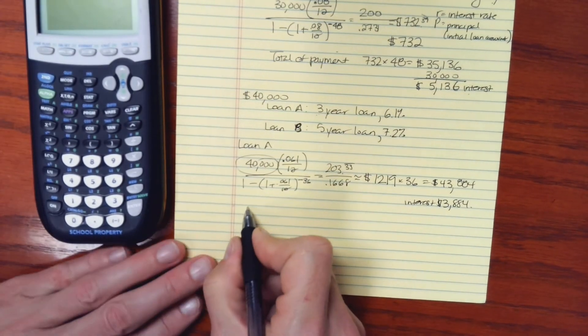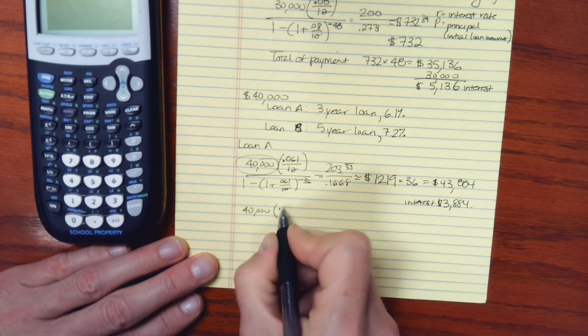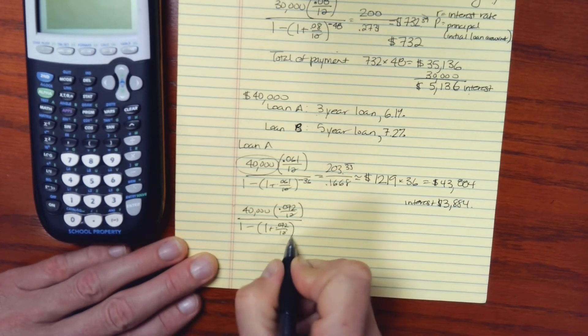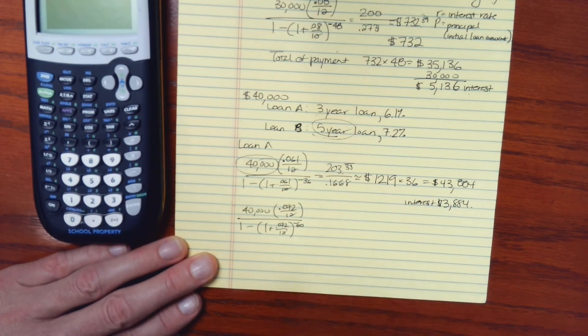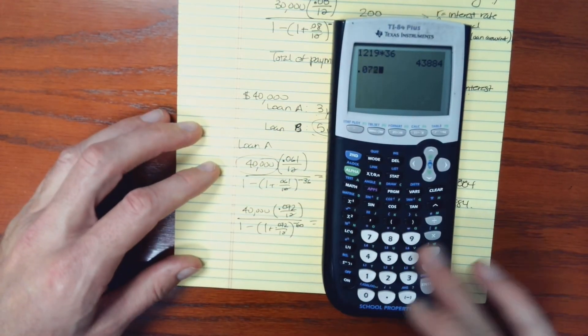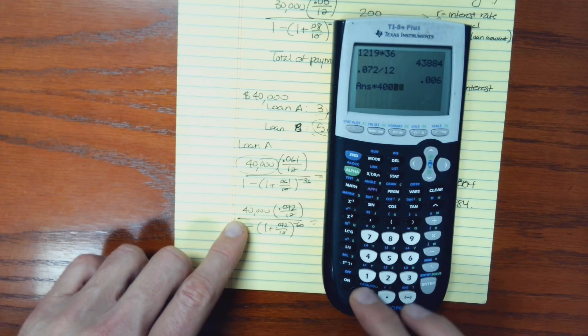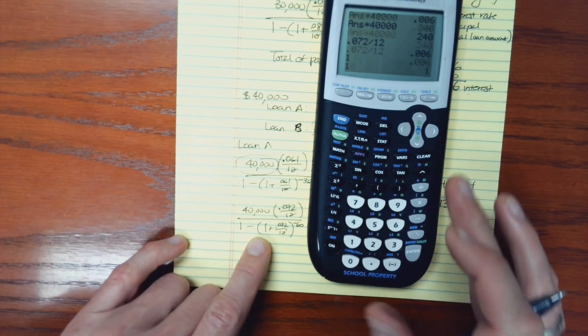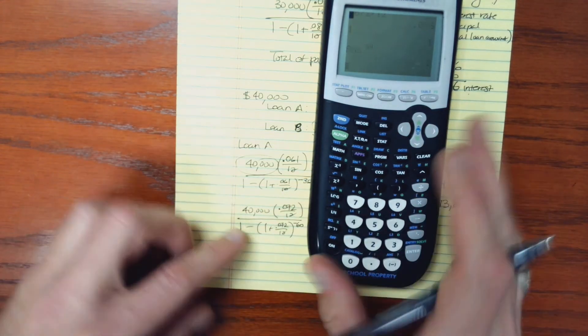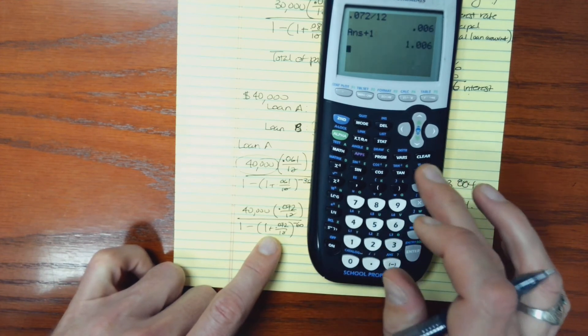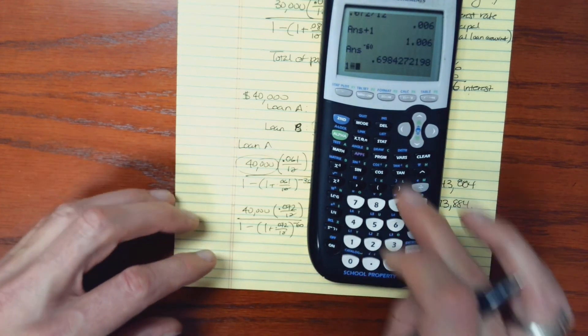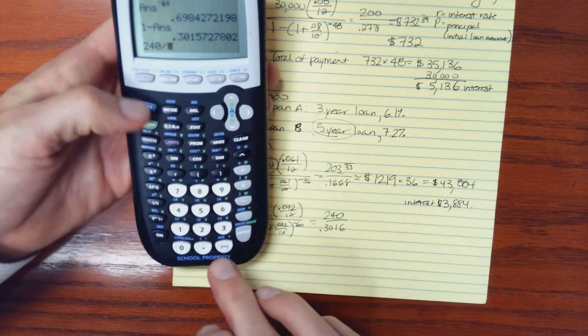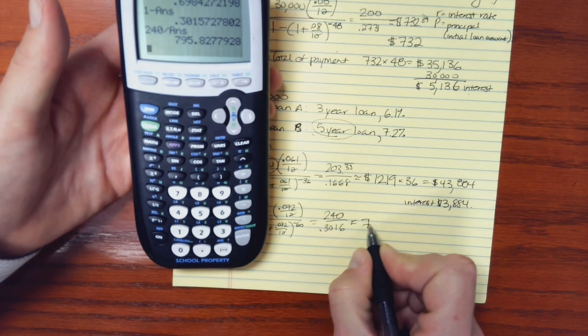And now let's look at loan B. I'm still going to have $40,000. This time the interest rate is 7.2, so 0.072 over 12. And then I have 1 minus, 1 plus, 0.072 over 12. This is a five-year loan. So that's 60 months. Now, 0.072 divided by 12 times 40,000. This is 240. And if I take 0.072 divided by 12, add 1 and raise that to the negative 60, and then 1 minus that answer. This is 0.3016. But I'm just going to take 240 divided by that result. And this is $796.